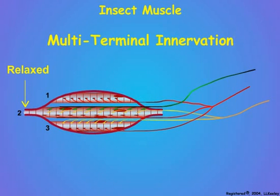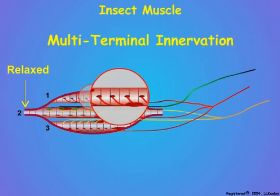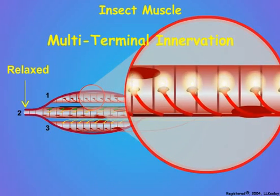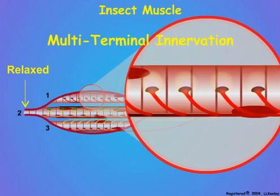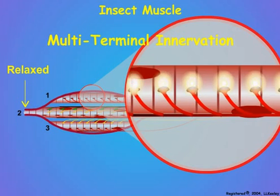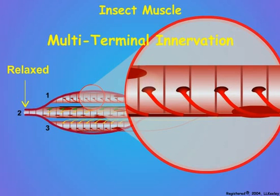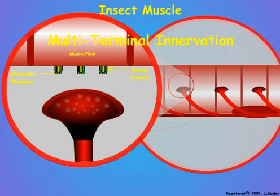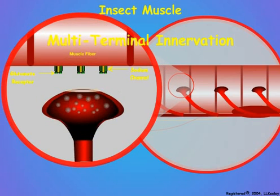Each motor nerve impulse releases a quantity of the amino acid L-glutamate that serves as a stimulatory neurotransmitter chemical for arthropod muscles. Here we see a close-up of a neuron motor end plate showing glutamate-responsive sodium channels on the muscle fiber surface.